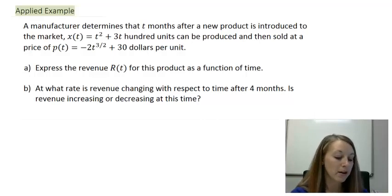So we have a manufacturer determines that t months after a new product is introduced to the market, x(t) = t² + 3t hundred units can be produced and then sold at a price of p(t) = -2t^(3/2) + 30 dollars per unit.